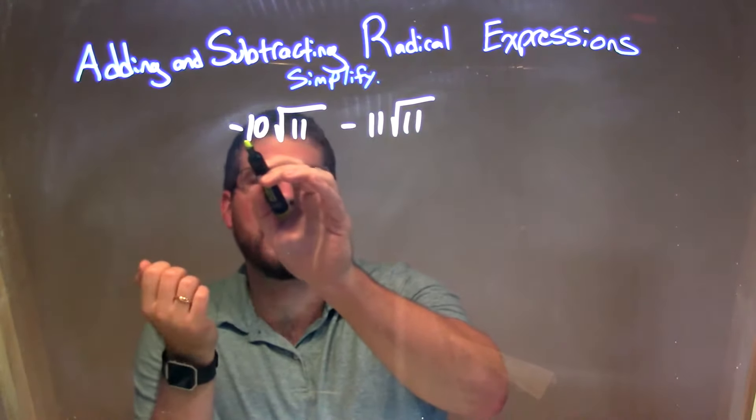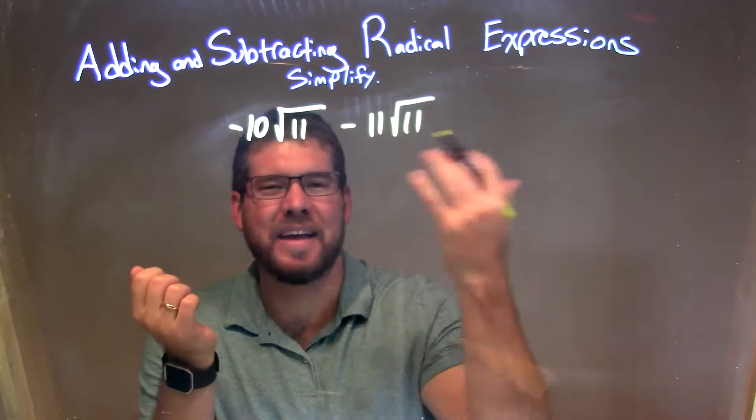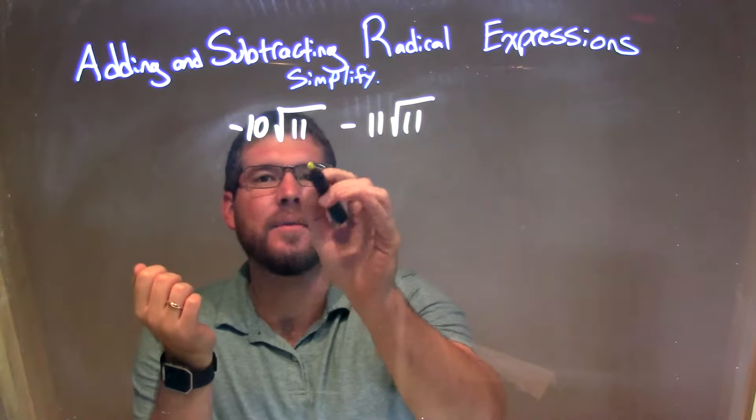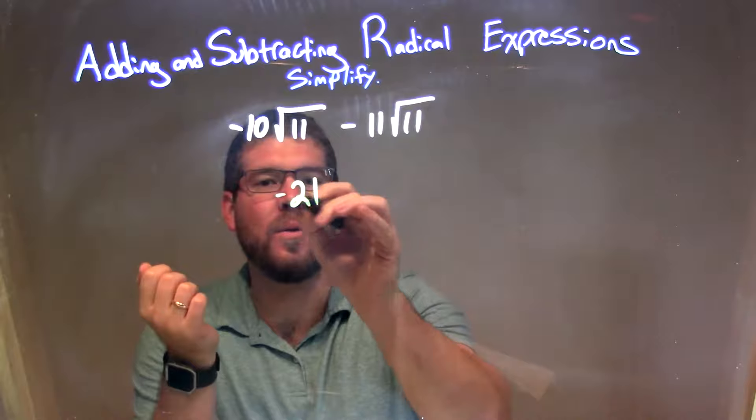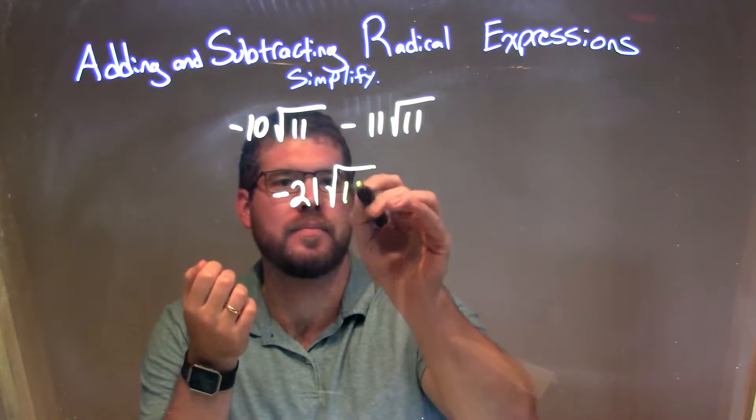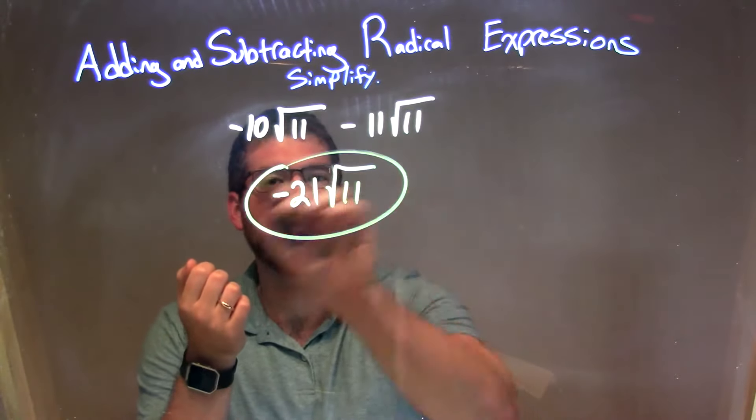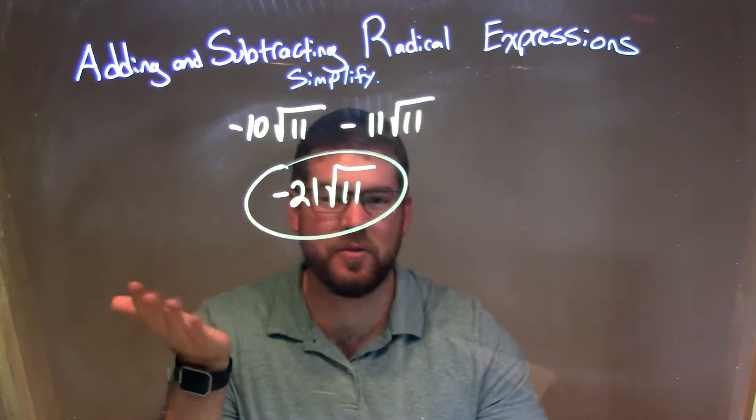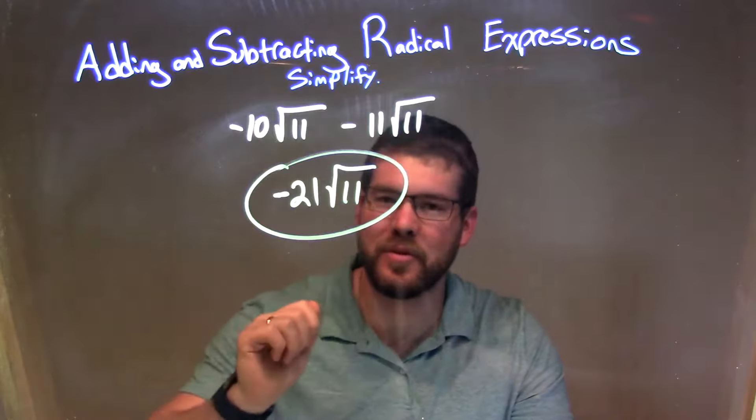So we subtract, in this case, negative 10 minus 11 is like adding a negative 11. So that comes out to be a negative 21. Then we bring down the square root of 11 right there, and so that's it, pretty simple. So our final answer here is negative 21 times the square root of 11.